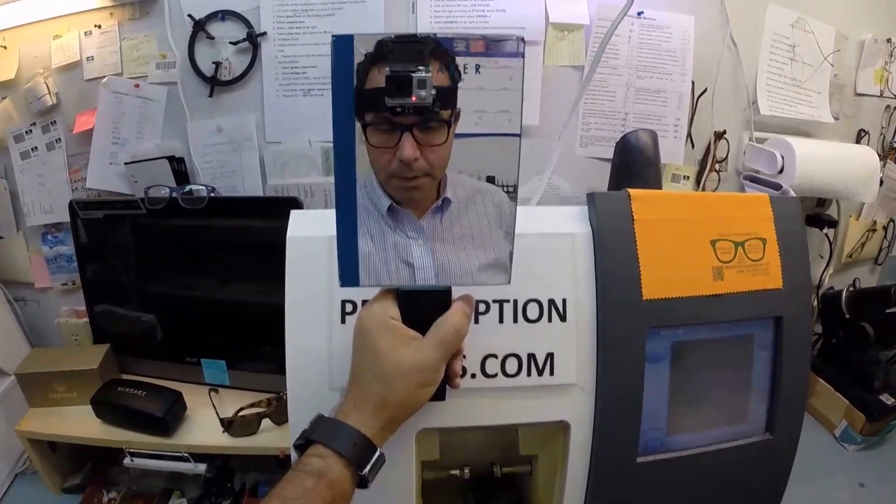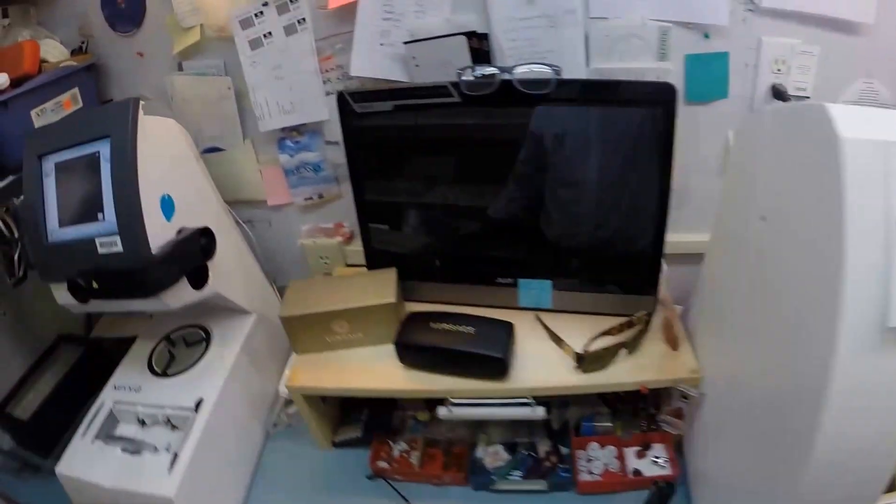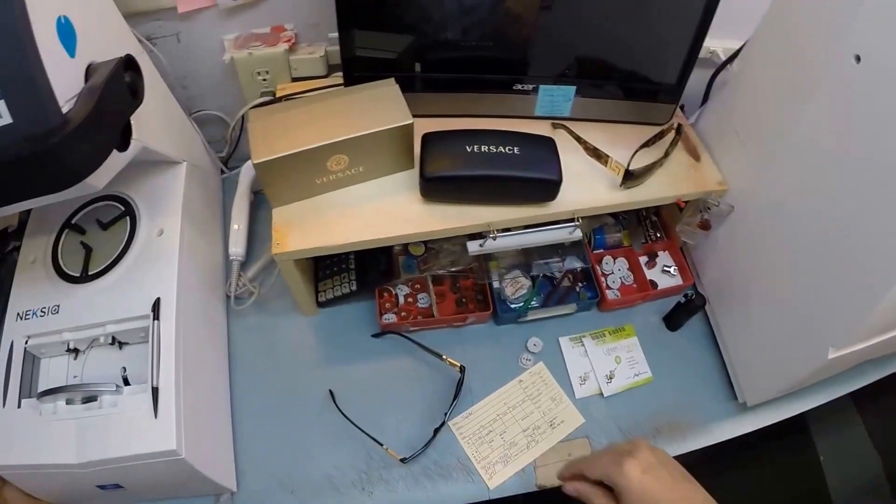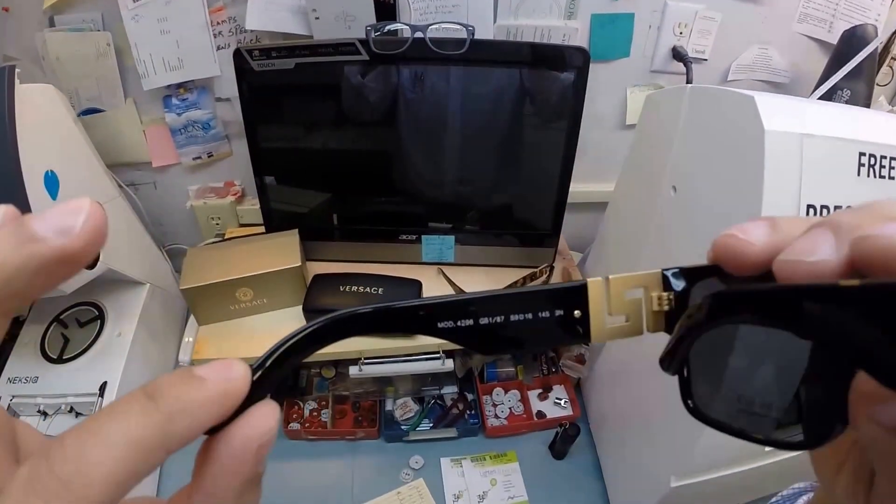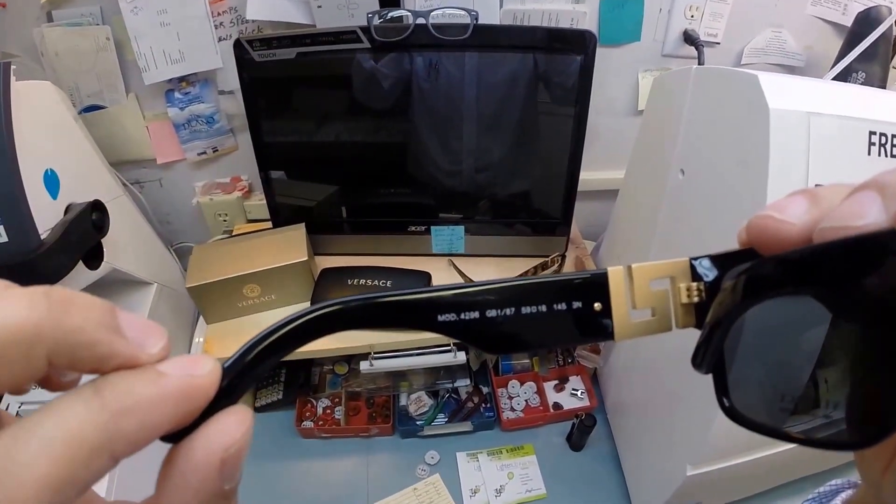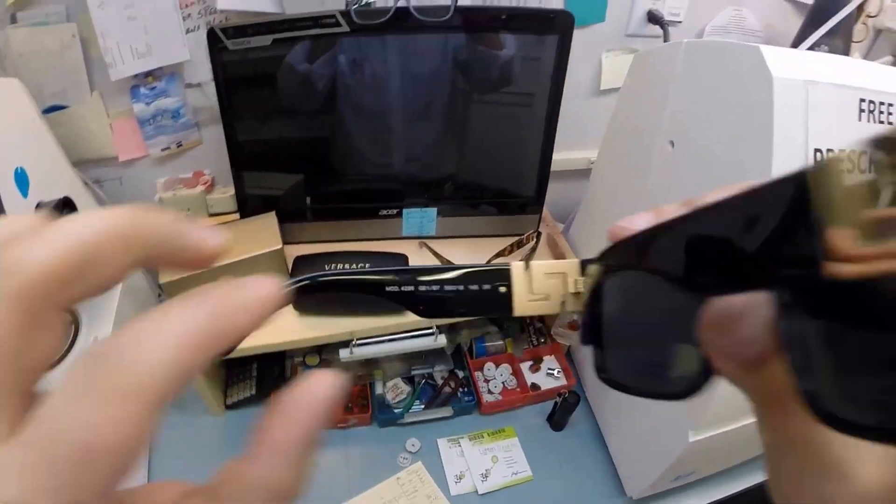Hey Tyler in the Bronx, Matthew here with FreePrescriptionLenses.com. With the help of my GoPro camera, I'm going to show you how I cut prescription lenses for your new Versace 4296, color GB1, which is the classic shiny black in the 59 eye size.